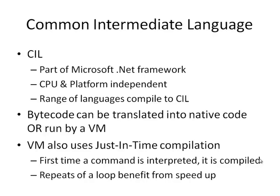Another example of intermediate compilation is with the Common Intermediate Language, CIL, which is part of Microsoft's .NET framework. It's CPU and platform independent, and a range of languages can compile to CIL. A key example is C Sharp and XNA: you can use XNA to develop a game that runs on Windows with an Intel CPU, and also use the same code to run the same game on an Xbox, which uses a different processor architecture with a different set of low-level commands. The bytecode from the intermediate language can be translated either to native code or run by a virtual machine — you can actually do a second stage of compilation to create purely native code from the intermediate language.